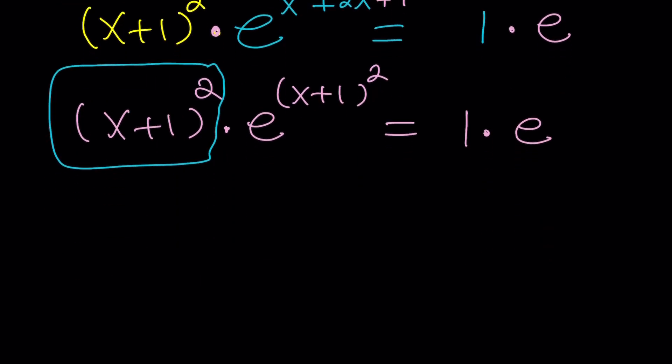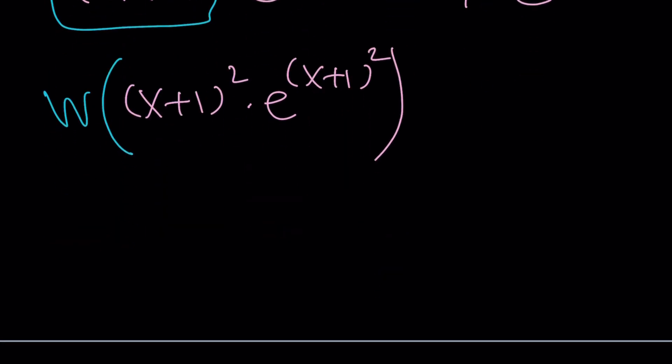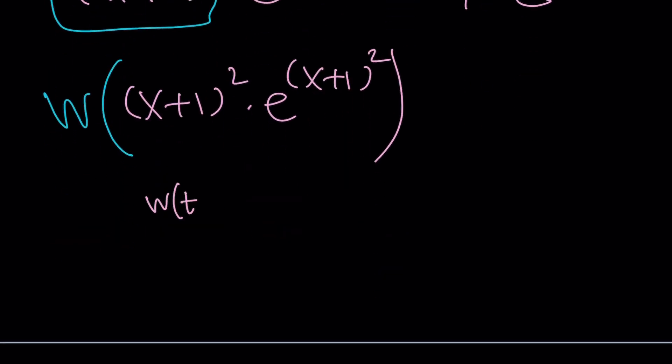So we can apply Lambert's W function on both sides. And we're going to get what? What happens when you apply Lambert's W function to a product like t e to the t? You get t, right? So in other words, w of t e to the t is t. Okay.